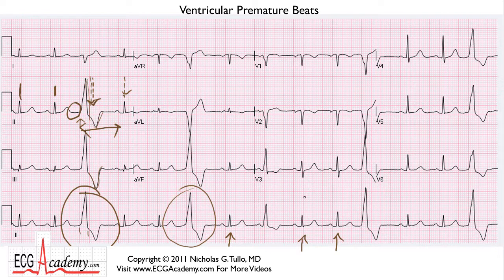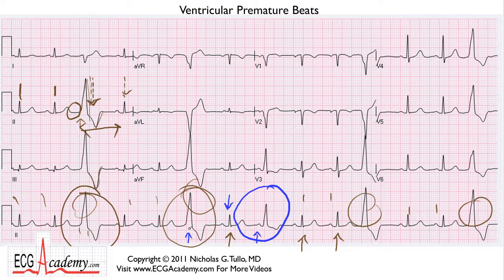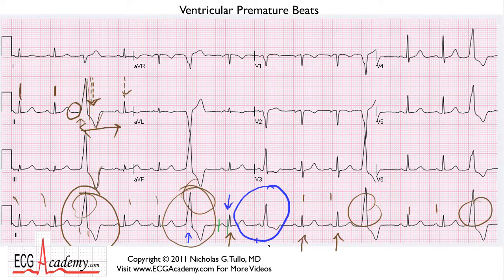There's a trigeminal pattern here: normal, normal, premature — repeating. But one beat is particularly interesting. It has a P wave in front of it and the QRS looks wide — not as wide as the PVCs, but not as narrow as the underlying beat. It looks halfway between the PVC and the normal beat, and there is a P wave in front of it. Looking at the PR interval is really important here: the underlying PR is about 180 milliseconds, but this PR is significantly shorter — only about 120 to 150 milliseconds.